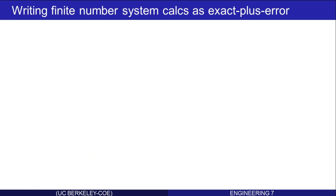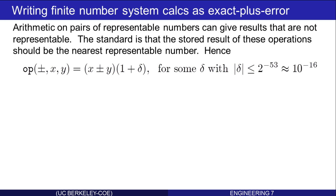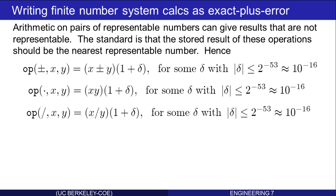Let's use that bound on representation errors to write bounds on the errors made in calculations. Remember that arithmetic on pairs of representable numbers can give results that aren't representable, but the standard is that the stored result of any one of these operations should always be the nearest representable number. Hence, plus or minus on two representable numbers x and y should always give close to the exact answer — in fact, the exact answer with a relative error that is no more than 2 to the negative 53. The mathematical operation ends up equaling the exact answer times 1 plus delta, where delta is some number less than or equal to 2 to the negative 53. Same thing for multiplication, same thing for divide.